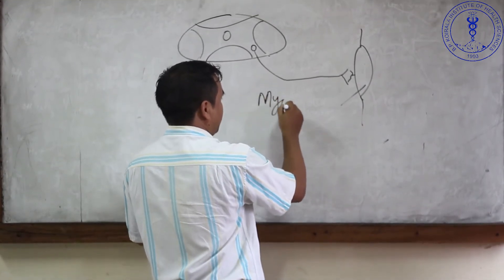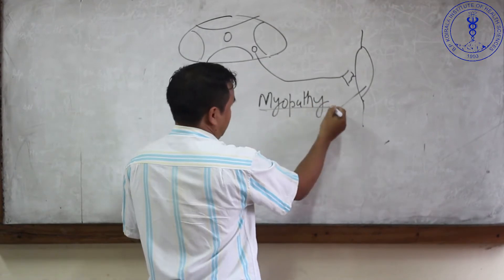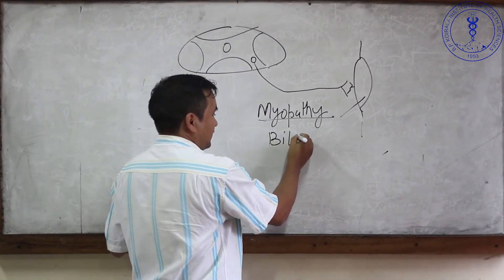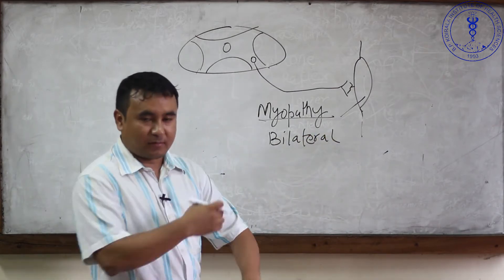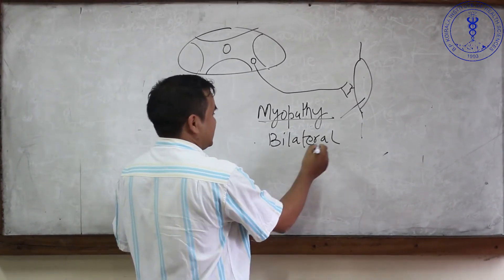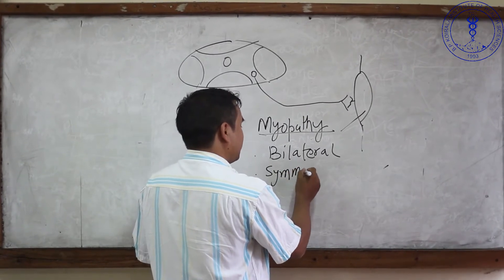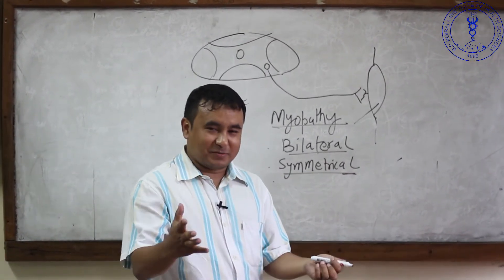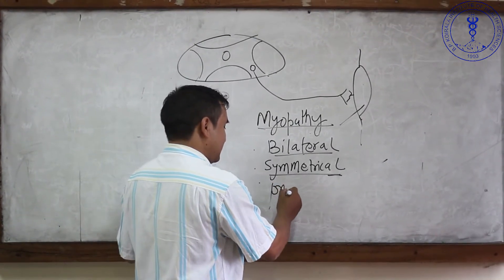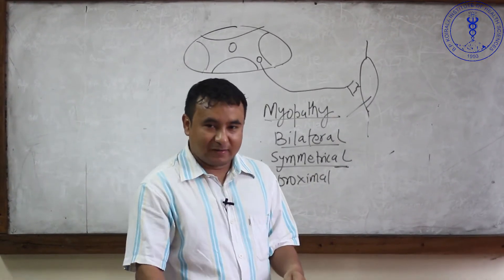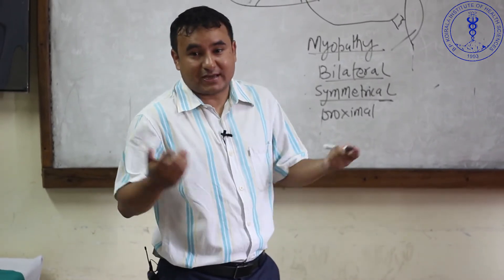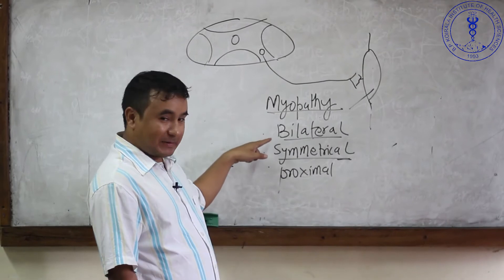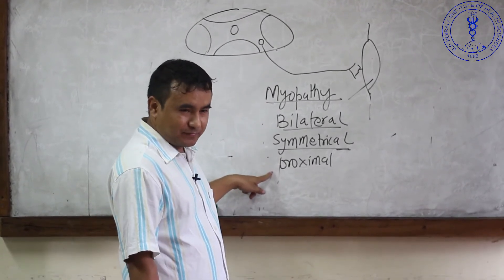If you have muscle disease, first of all it is bilateral - the problem is in both legs and probably both arms. It is symmetrical. The weakness is proximal, characterized in the lower limb by difficulty standing from the squatting position - that is the classical history of proximal weakness. So in myopathy you will have bilateral, symmetrical, and proximal weakness.